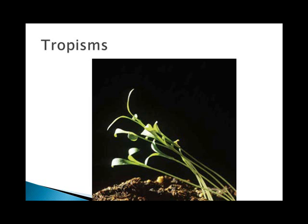Gravitropism is the response to gravity. Different parts of plants are differently responsive: roots are positively gravitropic and stems are negatively gravitropic. There's also thigmotropism, also referred to as nastic movement, which is the response to touch. Certain plants will close their leaves to protect their softer parts when touched — this protects them from being eaten, for example by grasshoppers. The plant will fold up and basically the grasshopper falls right off.